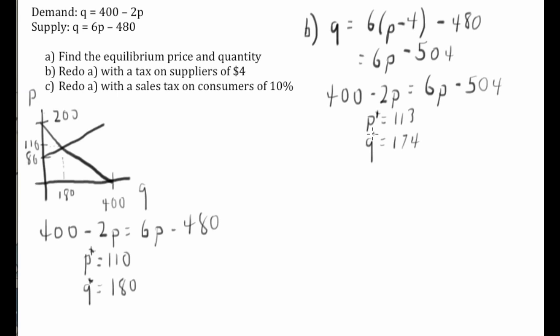Now, think about this a little bit. Notice what's happening here. The price that consumers are paying is going up by $3 from $110 to $113. So the $4 tax - consumers are paying $3 of it, which means that the suppliers are paying $1 of it.